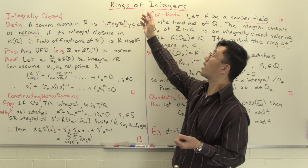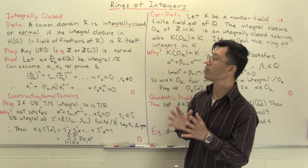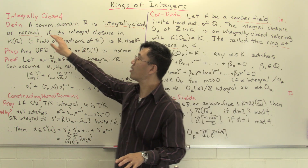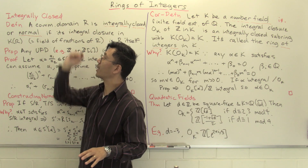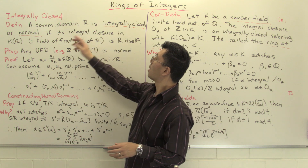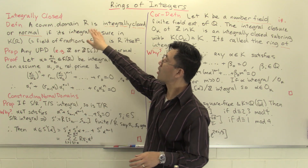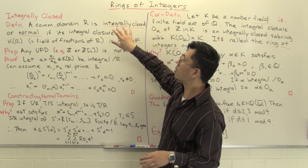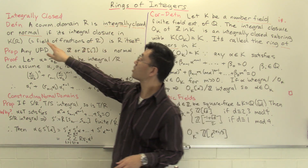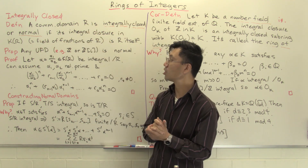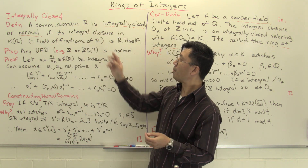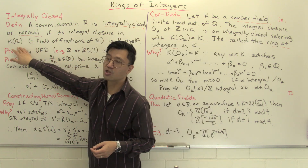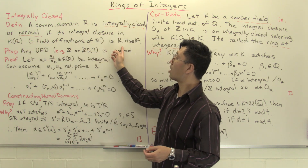And that's what I want to do here. In this video, I want to talk about rings of integers. And the key concept that we need here is this notion of being integrally closed. Suppose you have a commutative domain R. We're going to call it integrally closed — another word for that is normal — if it satisfies the following condition: basically, its integral closure inside its field of fractions K of R is going to be in itself.